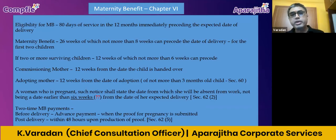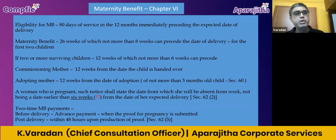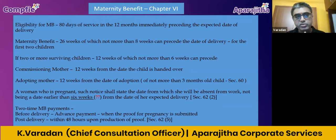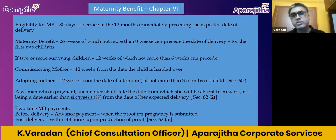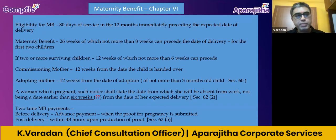Of the 26 weeks, eight weeks can precede the date of delivery. If the person has two or more surviving children, then instead of 26 weeks it will be 12 weeks, of which only six weeks can precede the actual date of delivery.